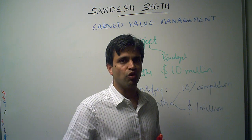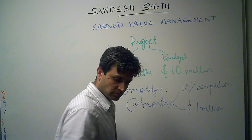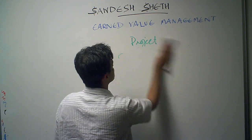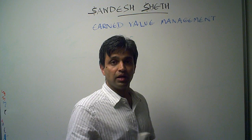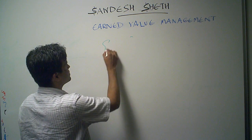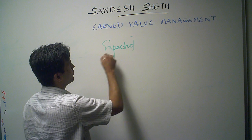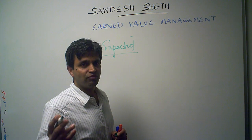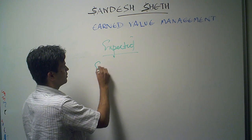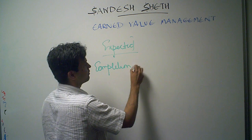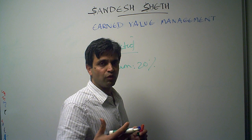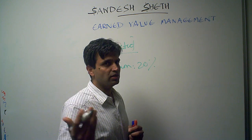Let us fast forward two months later. After two months, this is what I expect: I should have completed 20% of the total work. So expected completion is 20%, and if I was able to stick to my budget, I should have spent $2 million.